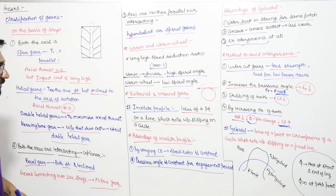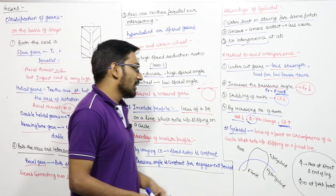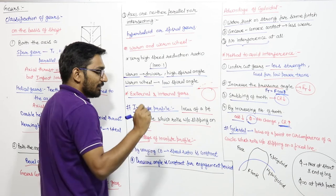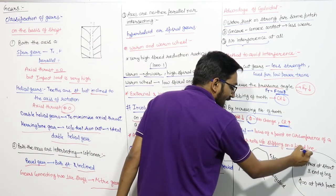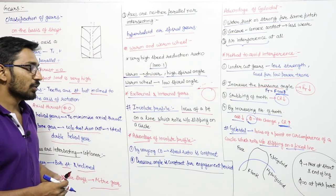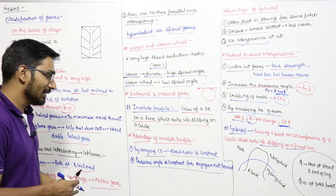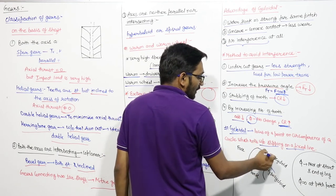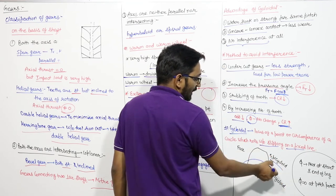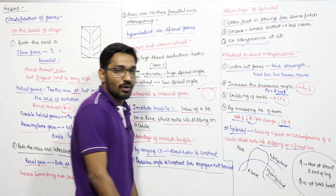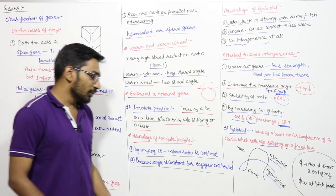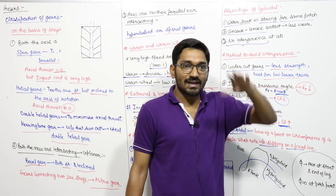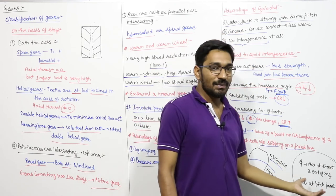The cycloidal profile is the locus of a point on the circumference of a circle rolling without slipping on a fixed line. The upper profile of the tooth is the epicycloidal profile; the flank profile is the hypocycloidal profile. This can be asked as a direct question. The pressure angle in cycloidal profile is maximum at the start and end of engagement (points K and L) and is zero at the pitch point.